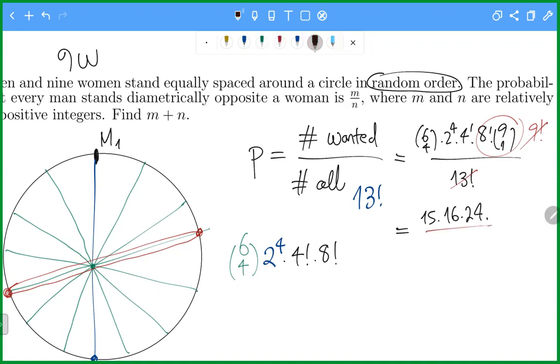simplify nine factorial with 13 factorial. And we have 13 times 12 times 11 times 10 in the denominator.